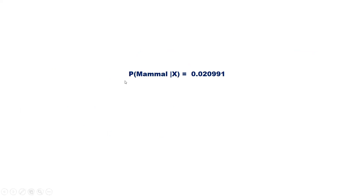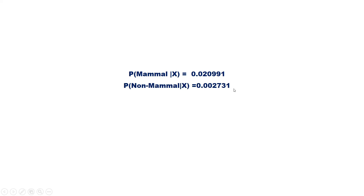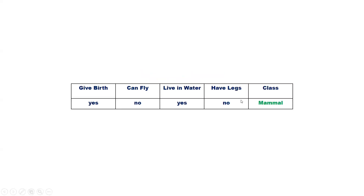We now have the values for both probabilities. The probability of mammal given X is 0.020991 and the probability of non-mammal given X is 0.002731. Since the probability of mammal given X is greater than the probability of non-mammal given X, we can classify our new record as class mammal.